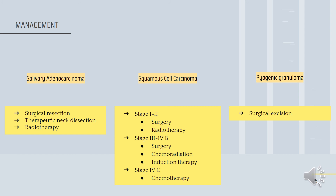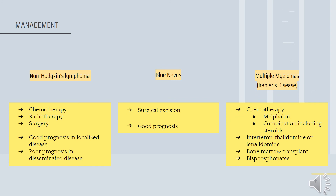For squamous cell carcinoma, patients at stage 1 to 2 should undergo surgery or radiotherapy; stage 3 to 4B should undergo surgery, chemoradiation or induction therapy; and stage 4C should undergo chemotherapy. For pyogenic granuloma, surgical excision is the treatment of choice. Non-Hodgkin's lymphoma can be managed by chemotherapy, radiotherapy and surgery in various combinations, with good prognosis in localized disease. For blue nevus, surgical excision is the treatment of choice with good prognosis. For multiple myeloma, patients are treated with chemotherapy using melphalan or combinations including steroids; remission is maintained by interferon, thalidomide or lenalidomide; and patients may undergo bone marrow transplant. Bisphosphonates may be indicated for widespread bone metastasis, though they carry a risk of bisphosphonate-induced jaw necrosis.